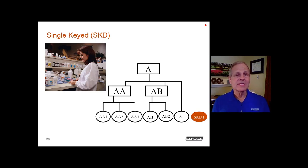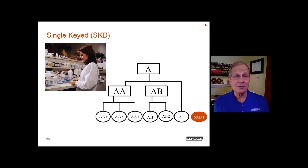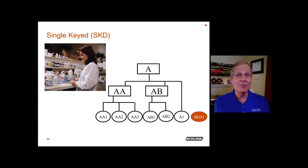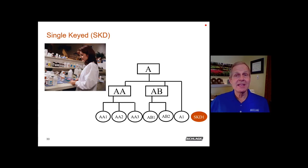We also have single keyed cylinders, sometimes called SKD — single keyed different. Only a single key operates the cylinder: no master, no grand master, no master pins — only bottom pins and top pins. These are labeled SKD followed by a number, so you might have SKD1 for a hospital pharmacy and SKD2 for the IT department. Be aware that the building grand master will not work on these cylinders, so SKD keys may need to be included in the key keeper box at the front of the building for fire department access in an emergency.